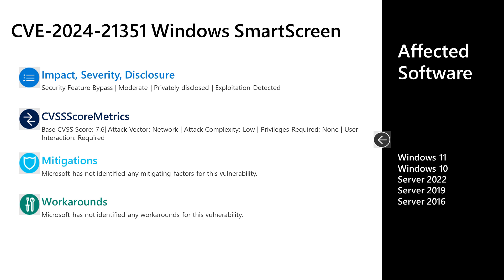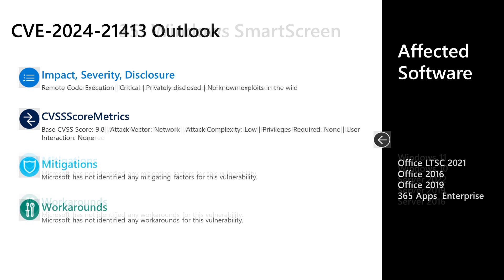Next is CVE-2024-21351, another security feature bypass vulnerability, this time in Windows SmartScreen. This is rated Moderate severity, privately disclosed, and has detected exploitation in the wild. It has a base score of 7.6; the attack vector is over the network, attack complexity is low, no privileges are required, and user interaction is required. The vulnerability allows a malicious actor to inject code into SmartScreen and potentially gain code execution, but it still requires convincing a user to open a malicious file. Affected software is all versions of Windows in mainstream support — desktop 10, 11, or Server 2016, 2019, or 2022.